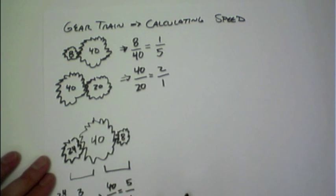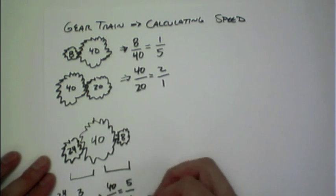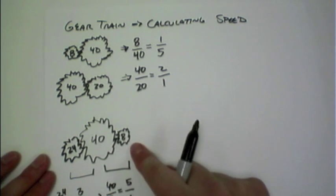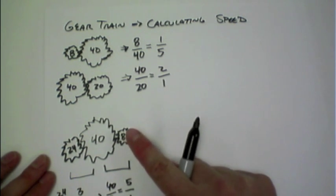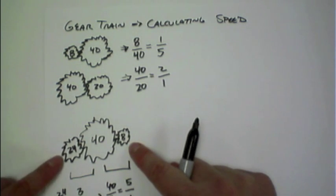What you can do is actually multiply these together. So if we do a 3 to 5 times the 5 to 1, that actually, the 5s cancel out, and we have a 3 to 1 relationship saying that the 8-tooth gear will turn three times for one rotation of the 24-tooth gear.